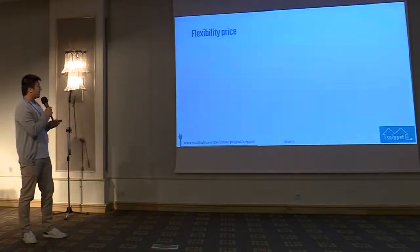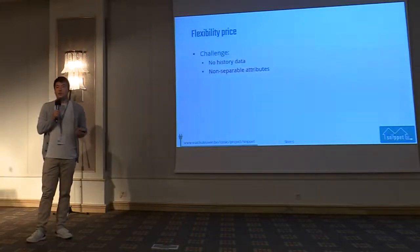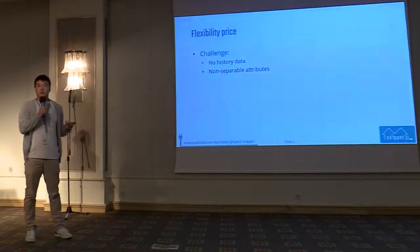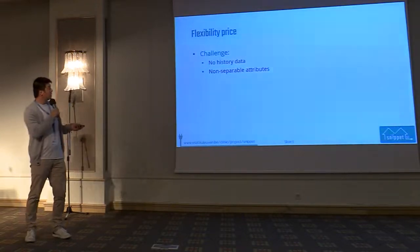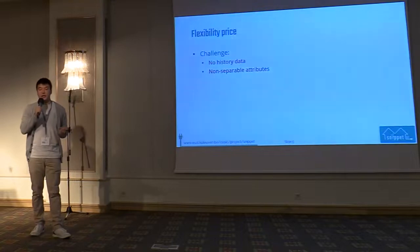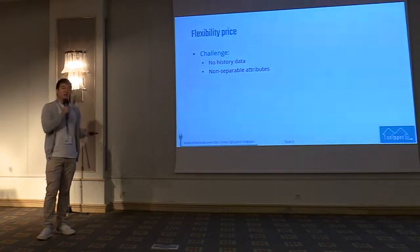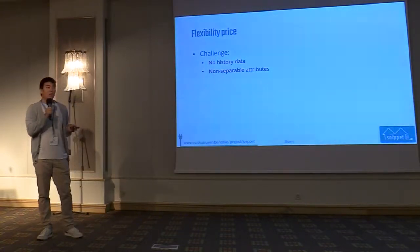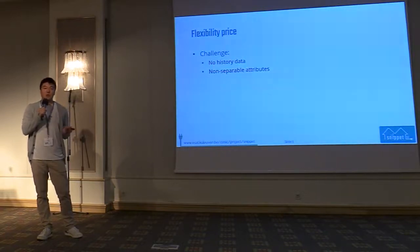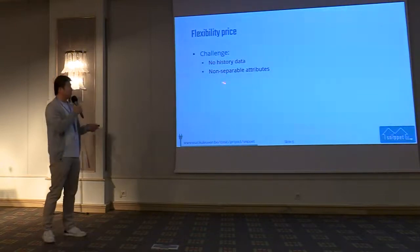The first challenge is flexibility pricing. It's not like peer-to-peer trading where price has references like wholesale or intraday markets. For the flexibility market, we do not have any historical data, especially from smaller scales like household-level flexibility. It's very difficult to determine how much to charge for one kilowatt of upward flexibility from 1pm to 2pm. This is also due to the non-separable attribute of flexibility — it's highly bounded by multiple attributes.